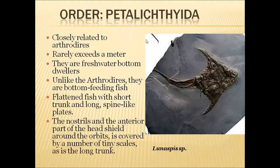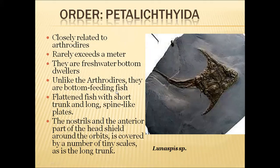The order Petalichthyida is closely related to Arthrodira. They rarely exceed one metre in length and lived in freshwater bodies as bottom dwellers. They had dorsoventrally flattened bodies. Unlike arthrodirans, which were active swimmers, Petalichthyidans were bottom-feeding fish with flat bodies.